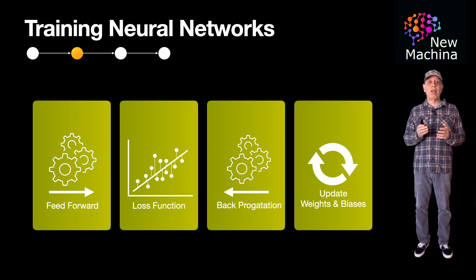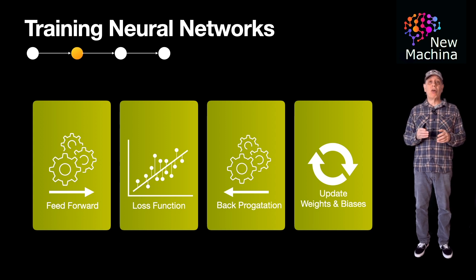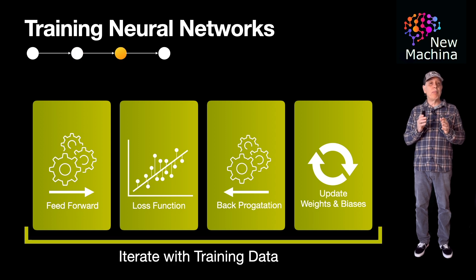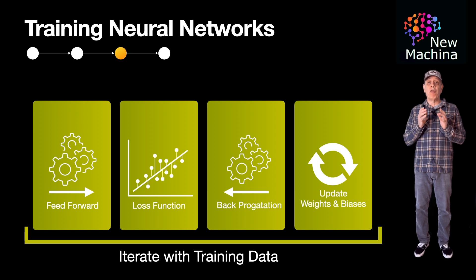In the fourth step, weights and biases are updated. The weights and biases are updated to minimize the loss. These four steps are repeated over multiple iterations where each iteration is also called an epoch. This is repeated until the network converges to an optimal solution. The process iteratively adjusts the weights and biases to improve its prediction.